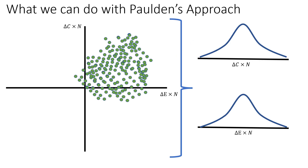This is where we extend Paulden's approach further. Recall we're able to generate a probabilistic sensitivity analysis and plot it on this plane, giving us two distributions associated with it. We take each one of these simulations, and now each simulation takes on the interpretation of the state of the world — what the total change in costs and total change in effects are, with their own distributions that we're able to decompose.